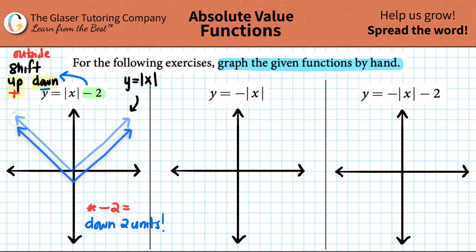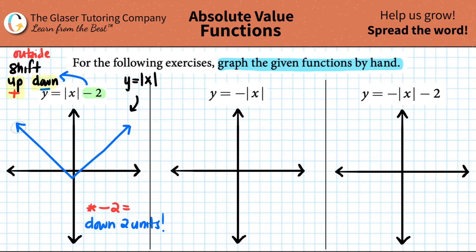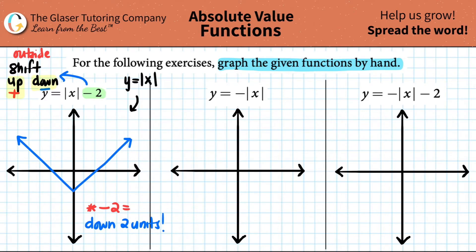So I'm going to take the whole graph and shift it down two units — down once, then down twice. Every point comes down with it. There it is: it was up here and you just went down two, and that is your new graph. That's the answer for this one.